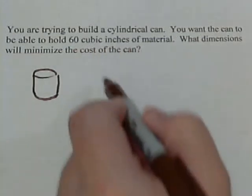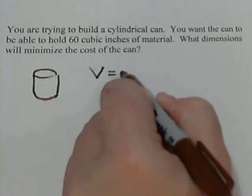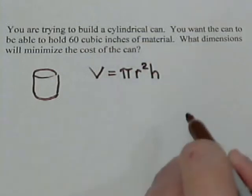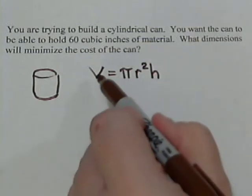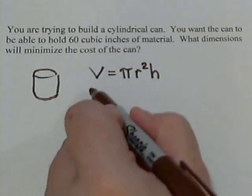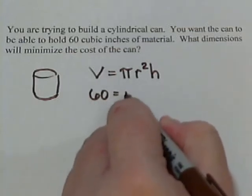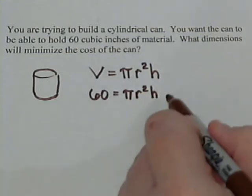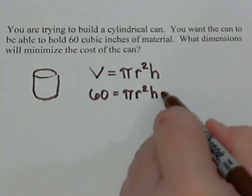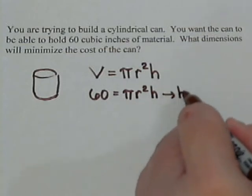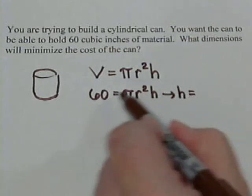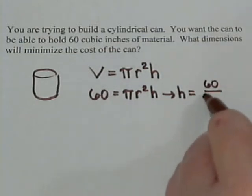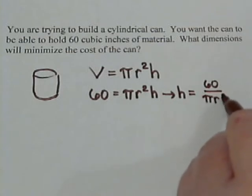So the volume of a cylinder is pi r squared times the height. And we know that we want the volume to be 60. So let's put in 60 for the volume, equals pi r squared height. And then because we're going to use it in a minute, let's solve this for h. We need to get the h by itself. So that's going to be 60 divided by pi r squared.